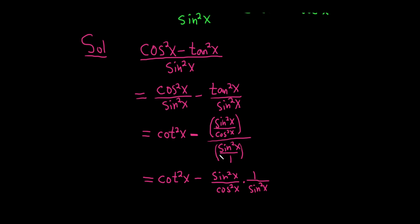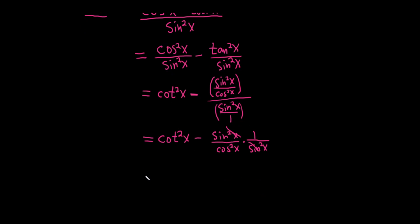Really nice. So the sine squared terms cancel. So this is equal to cotangent squared x, and then we're left with minus 1 over cosine squared x.